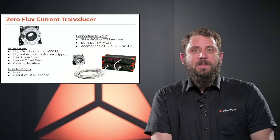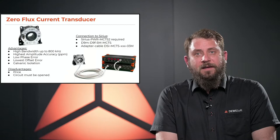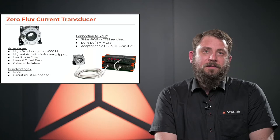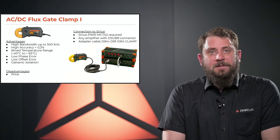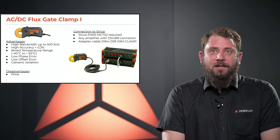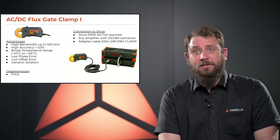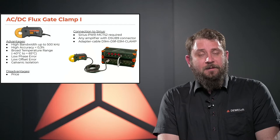The zero flux transducer has many advantages: extremely high bandwidth up to 800 kHz, highest amplitude accuracy in the parts-per-million range, very low phase error, lowest offset error, and galvanic isolation. Its disadvantages are the price and the need to open circuits to insert wires through the transducer. The flux gate clamps also have many advantages: very high bandwidth up to 500 kHz, very high accuracy below 0.3%, a broad temperature range from minus 40 to 65 degrees Celsius for summer and winter testing, low phase and offset error, and galvanic isolation. Their main disadvantage is that they are quite expensive.